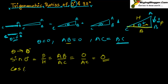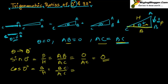Now let's find cos zero. Cos zero equals B upon H. B is BC and H is AC. When theta tends to zero, AC and BC become equal, so in place of BC I can write AC. AC upon AC gives us one. So cos zero degree equals one.